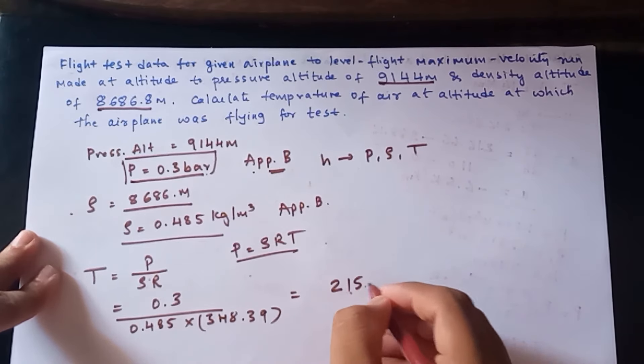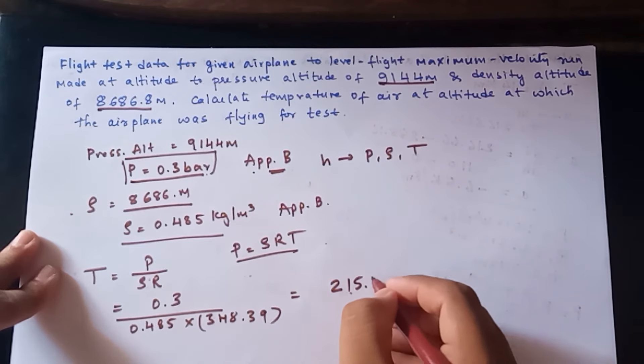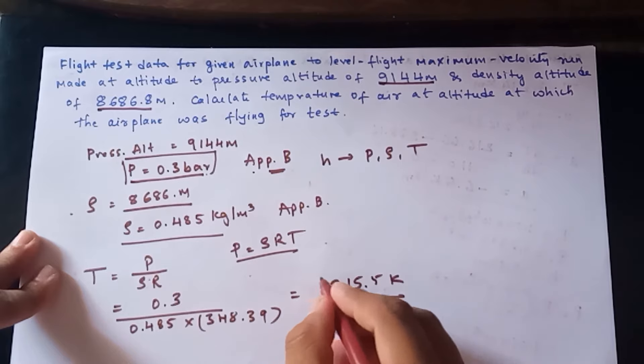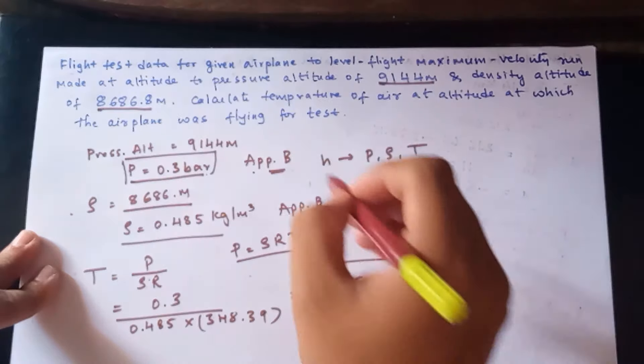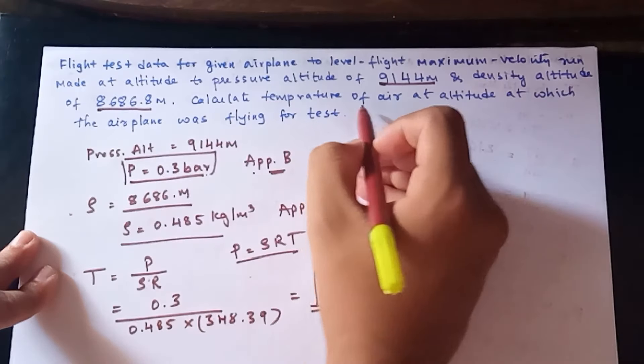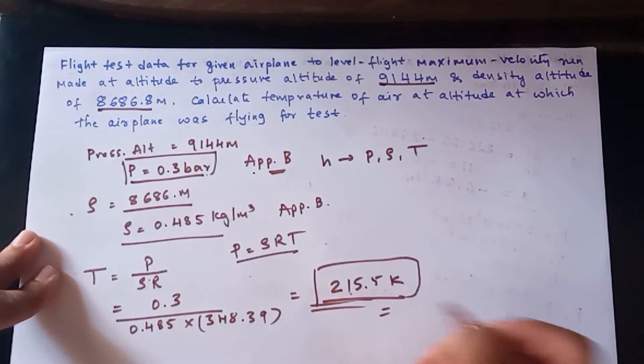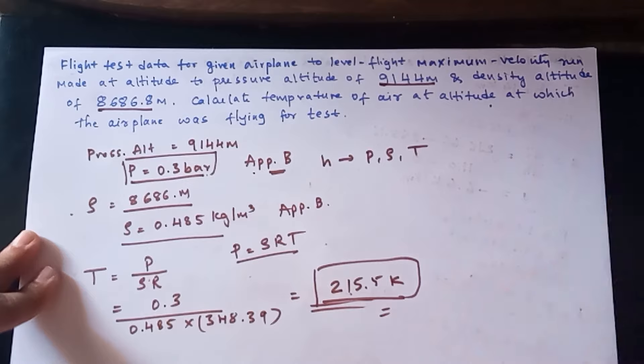215 point something, let's say about 215 Kelvin. This is the temperature we get. They asked us to calculate the temperature of air and this is the temperature of air for that given altitude.